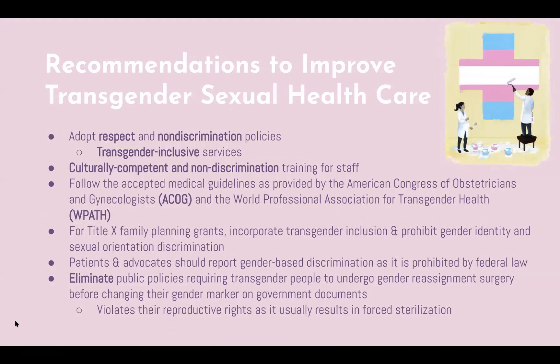To improve transgender sexual health care, facilities should adopt respect and non-discrimination policies and create transgender-inclusive services. Culturally competent and non-discrimination training for staff should also be implemented. Healthcare facilities should follow accepted medical guidelines as provided by the American Congress of Obstetricians and Gynecologists as well as the World Professional Association for Transgender Health. For Title X Family Planning Grants, the system should incorporate transgender inclusion and prohibit gender identity and sexual orientation discrimination. On a more local level, patients and advocates should report gender-based discrimination, as these actions are prohibited by federal law. Finally, it is critical that we eliminate public policies requiring transgender individuals to undergo gender reassignment surgery before changing their gender marker on government documents, as this would violate reproductive rights and usually results in forced sterilization.